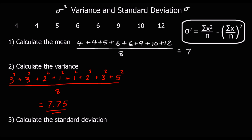That method is good when we've only got a few numbers, but when we've got a large amount of data or a table, we can't use it. Instead we use the formula: variance equals the sum of x² divided by n, minus the sum of x divided by n, all squared. In other words, it's the mean of the squares minus the square of the mean.